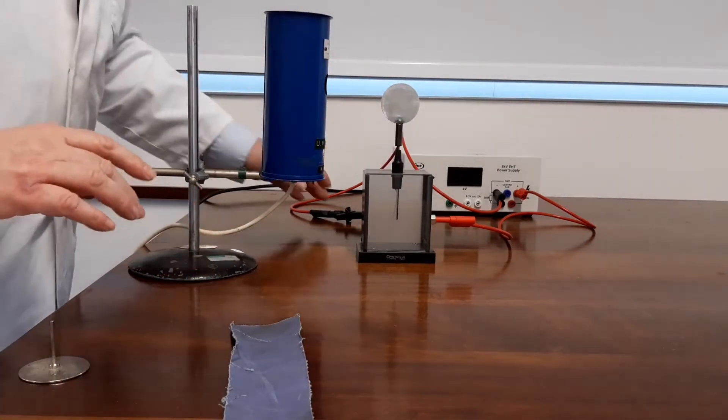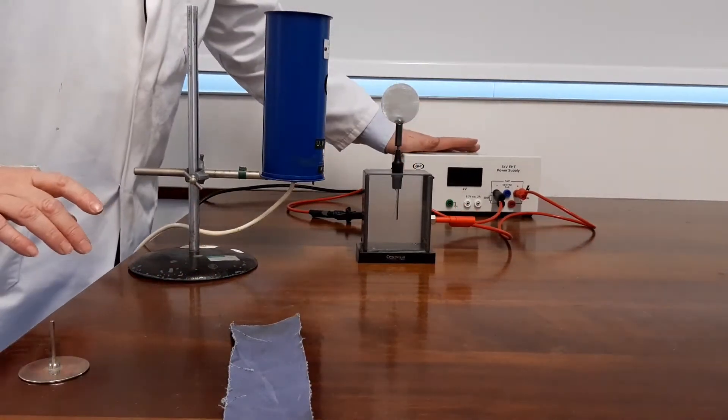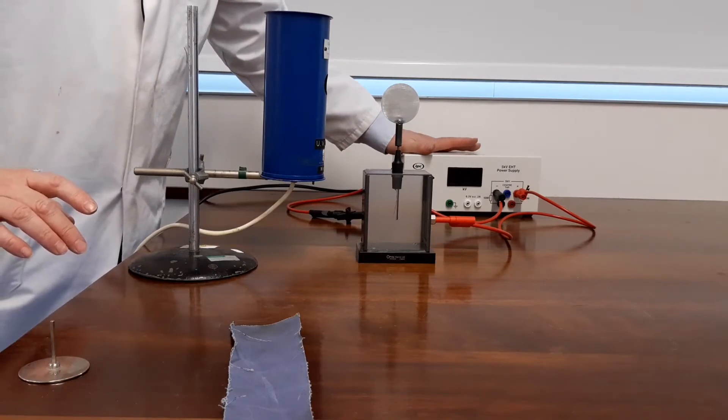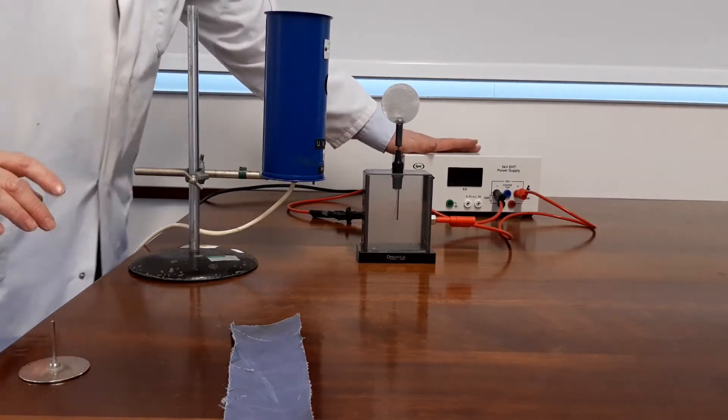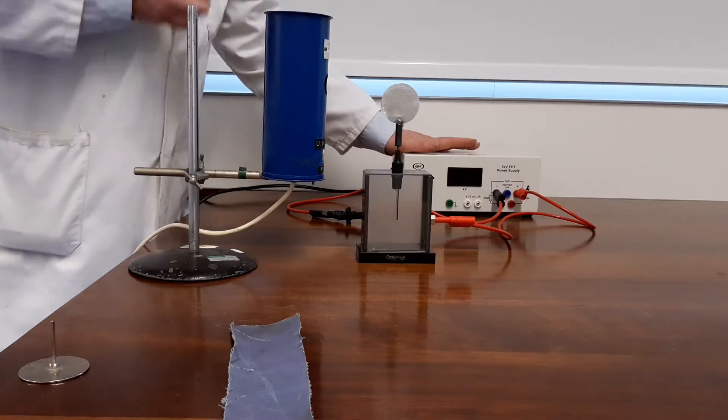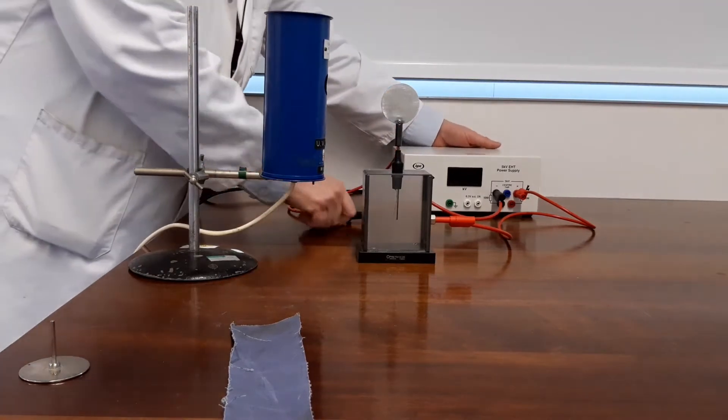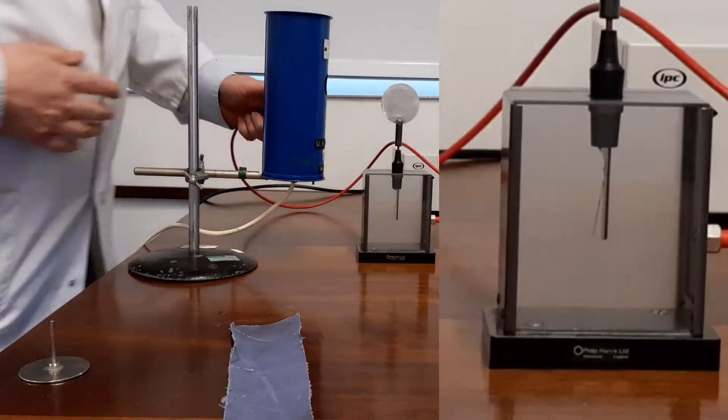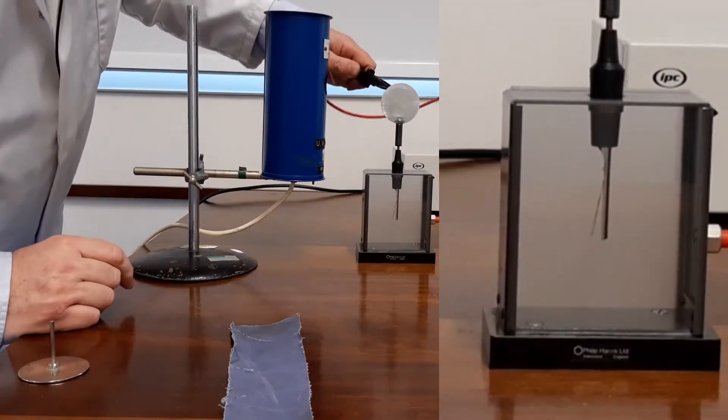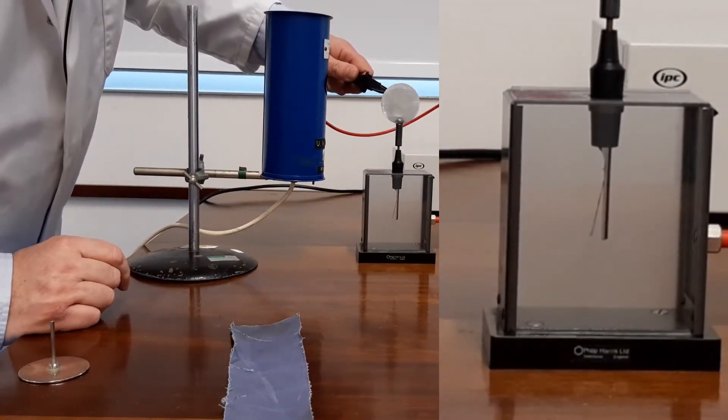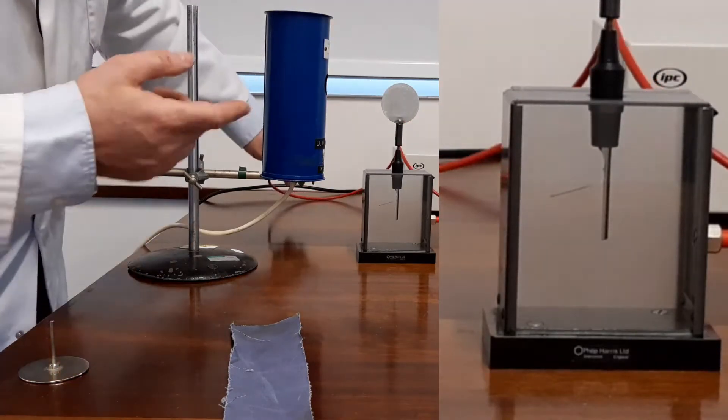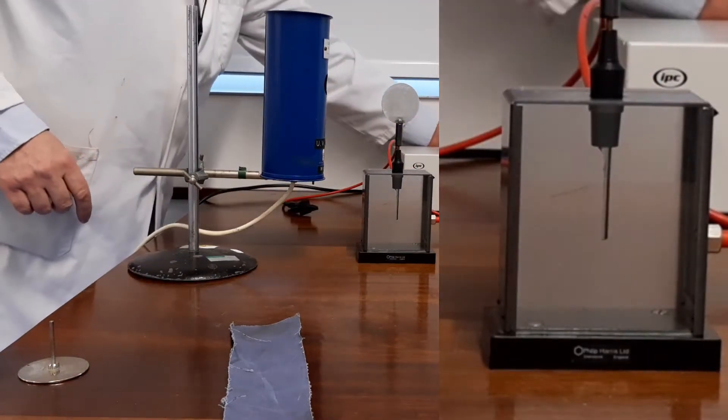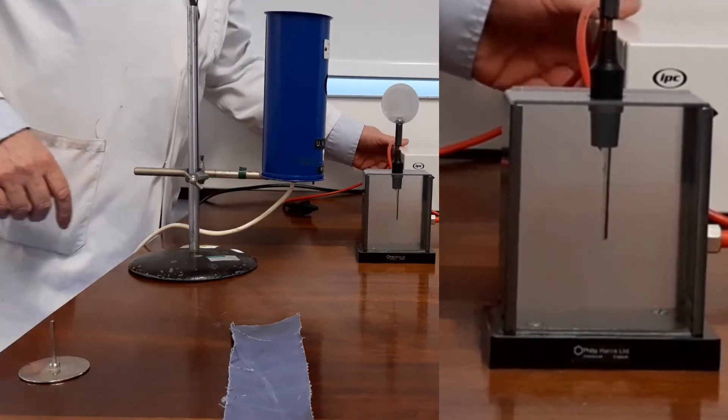I then charge. I'm using an EHT supply because it makes getting the right polarity that much easier than charging by rubbing a rod, but you could use that if you needed to. So about 2 kV and as you can see we've got the charge on there. Switch that off and it's no longer required.